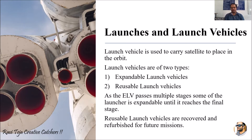Expendable launch vehicles, also called ELVs, pass through multiple stages. As the vehicle moves into space above the Earth, each segment of the vehicle is burnt out one by one. At the last stage, only the head part of the vehicle remains, and this head part carries the satellite that is ready to be launched into orbit.